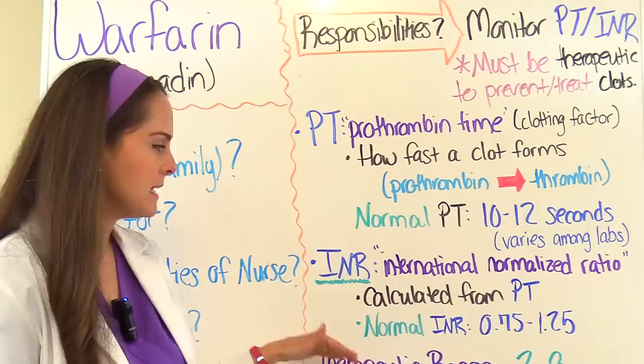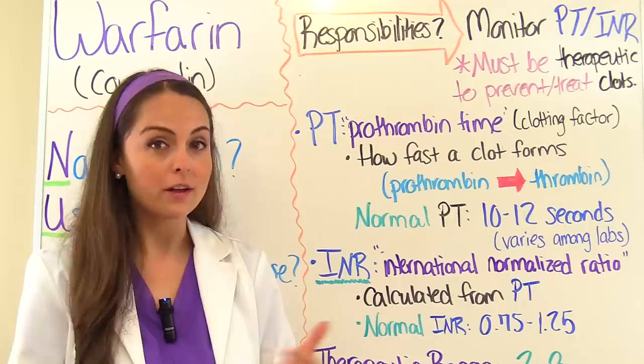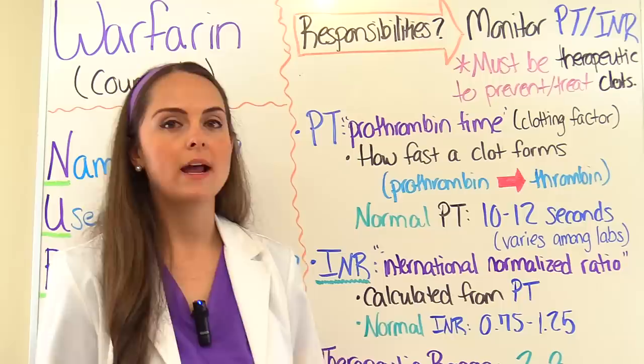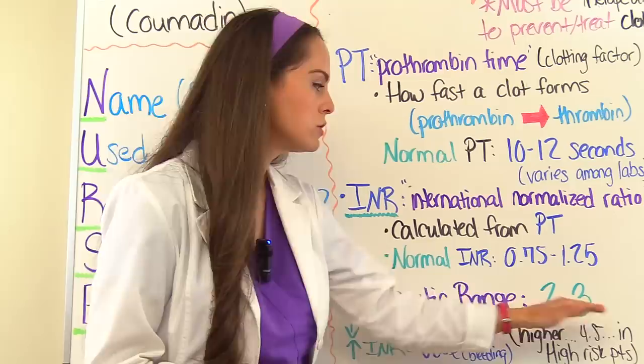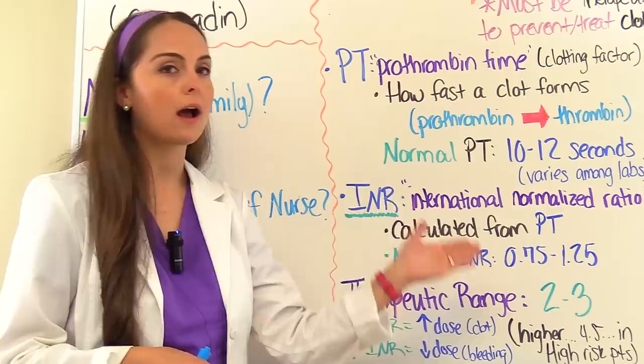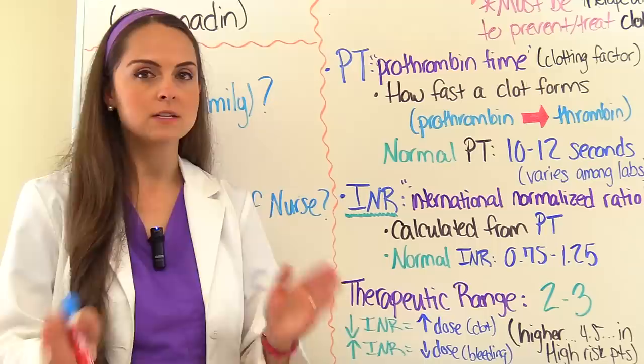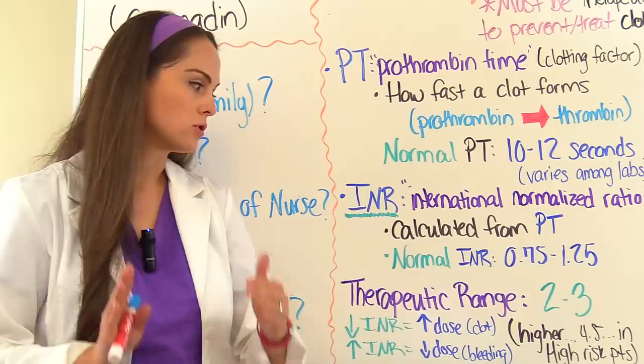INR stands for international normalized ratio. It's calculated from the PT and creates a standardized system for reporting values for warfarin. A normal INR in someone not taking warfarin would be 0.75 to 1.25. The therapeutic range we want a patient in when taking warfarin is 2 to 3 — remember that number. It may be slightly higher, up to 4.5, in patients at higher risk of developing a blood clot, depending on what the physician has determined for that patient.